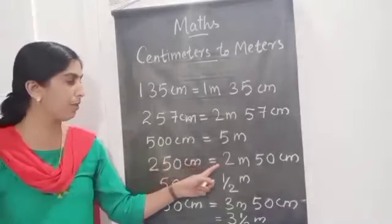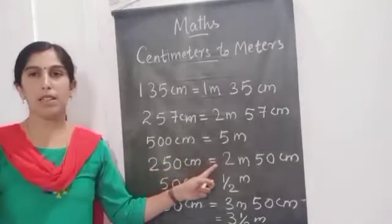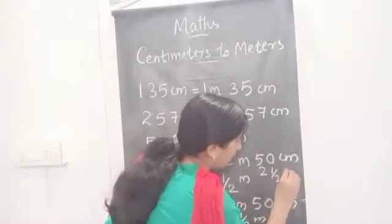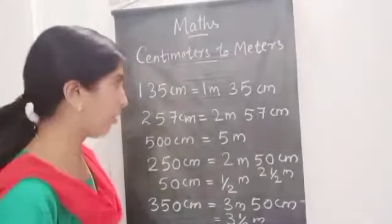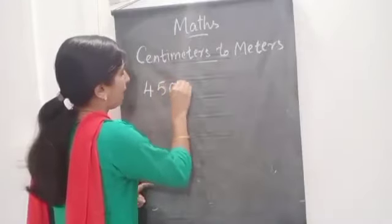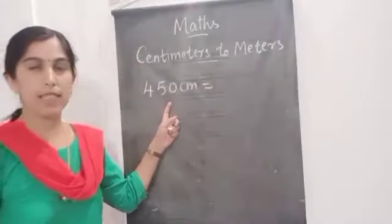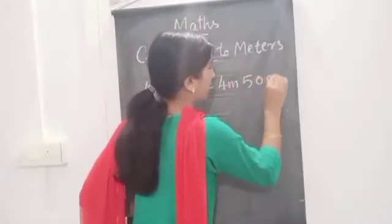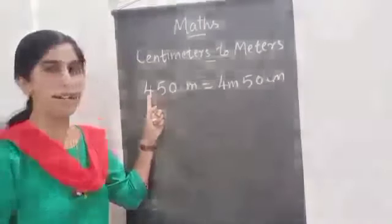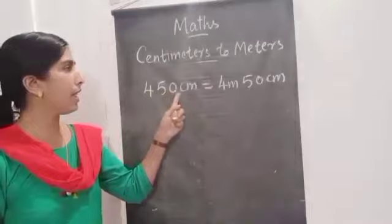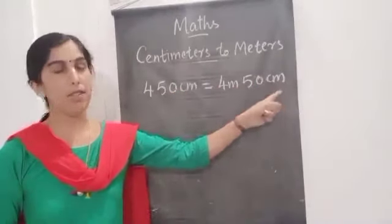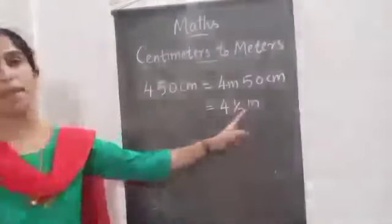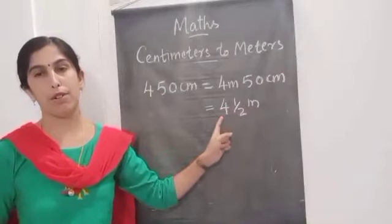How will you convert 250 centimeters into meters? Two and a half meters. You can write it like that also. Now, 450 centimeters — can you convert into meters? Four hundred and fifty centimeters. You can write four meters and fifty centimeters, or four and a half meters. Four hundred is four meters, then fifty centimeters — you can write four and a half meters. No need to write centimeter here.